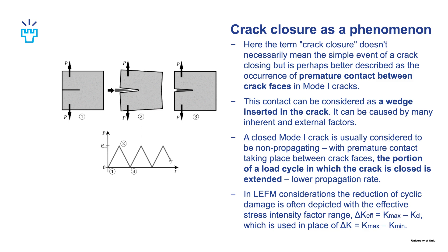Usually a closed mode 1 crack is considered to be non-propagating, so if we have premature contact taking place between the crack faces, then the portion of a load cycle in which the crack is closed is extended and this will lead to a lower propagation rate. In linear elastic fracture mechanics, the reduction of cyclic damage is often depicted with the effective stress intensity factor range, or delta K_eff, in place of the normal delta K. In delta K_eff, we substitute the minimum stress intensity factor with the stress intensity factor at the point when crack closure takes place — that is K_cl.